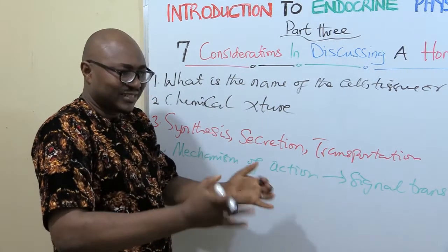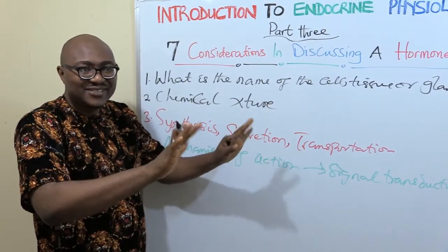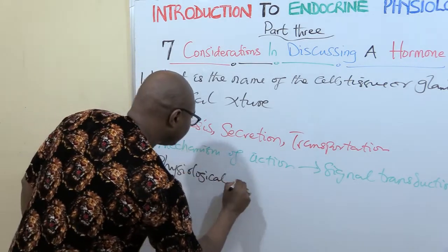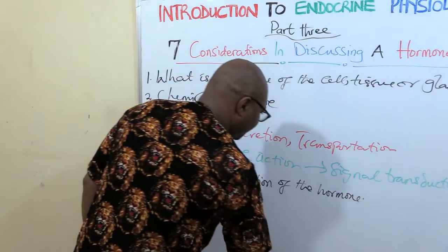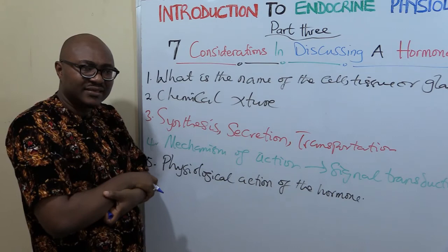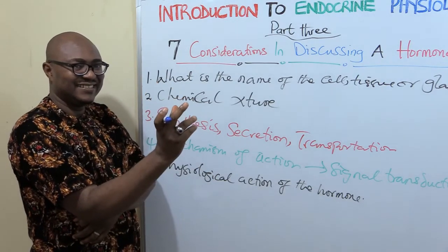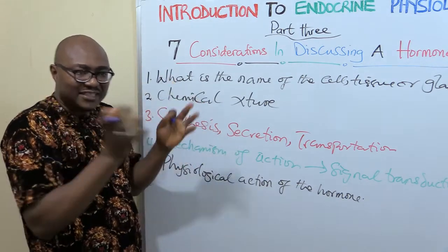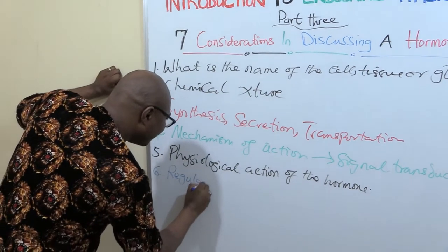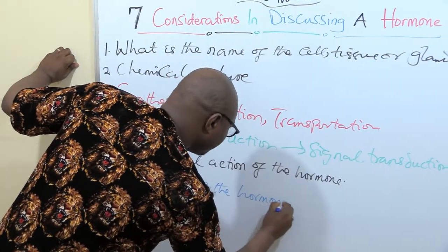After the mechanism has been transduced, it starts performing the real function in homeostasis — that's the physiological action of the hormone, and it must be clear in your mind. That's the fifth thing. Then number six: the hormone has acted, but it should not just be left alone to act indefinitely. It has to be regulated — because once it's finished its action, sometimes the secretion needs to stop. So you need to understand the mechanism of regulation: how is the hormone regulated?